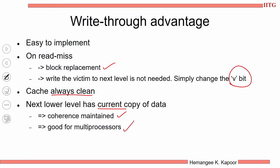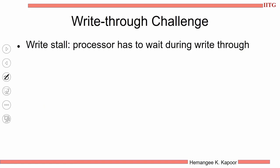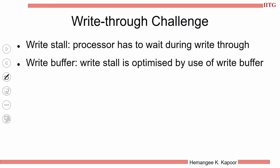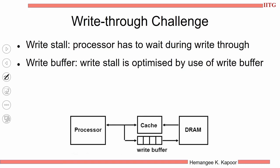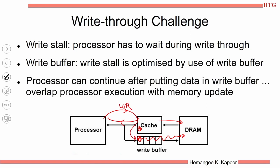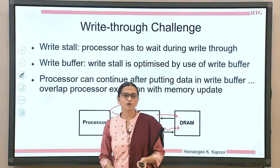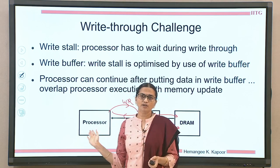Each type of cache has its own advantages. However, write through cache has the challenge that the processor is stalled until we finish the write to the next level. For this there is a small optimization: use a write buffer. There is a processor, the cache, and then the memory. Instead of sending the block directly to DRAM, we update the cache and also put the update information in a write buffer. This write buffer will eventually send the information to the DRAM. Once the processor finishes the write in the cache, it can immediately continue processing. So memory update and further processing can be overlapped.